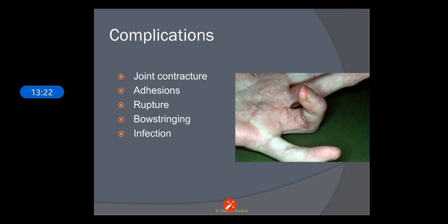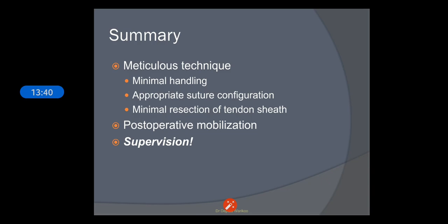Complications include joint contractures, adhesions, and difficulty rehabilitating patients after removal of the splints. Sometimes ruptures or bowstringing of the tendons are also seen, along with common infections. These were the basic flexor tendon injuries — how they occur and how we treat them. Thank you.